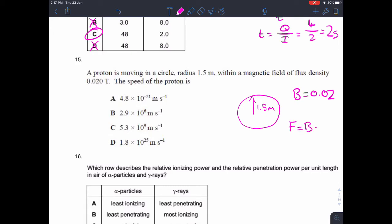So F equals BQV. What we don't have here out of these four things, we're looking to find V, what we don't have is F. But we know that it's moving in a circle. So the force acting on something moving in a circle is MV squared over R equals BQV. One of these V's cancels with this V, and so we're trying to find the speed. So the speed is BQR over M, and that calculates out at 2.9 times 10 to the 6 meters per second. B.